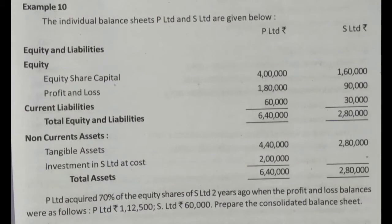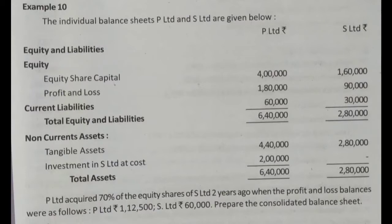Two years ago, when the acquisition took place, the profit and loss balances were: P Limited had 1,12,500 and S Limited had 60,000. The current balance sheet shows S Limited's profit at 90,000. Since the acquisition happened two years ago when S Limited had 60,000 profit, the pre-acquisition profit is 60,000. After 90,000 minus 60,000, the post-acquisition profit is 30,000.